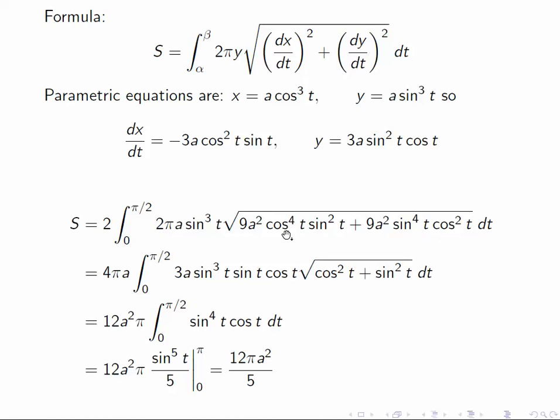The first one is that number multiplied by cosine squared, and the second one is that number multiplied by sine squared. So if we take that out, it becomes, out of the square root, it becomes 3a sine t cosine t.